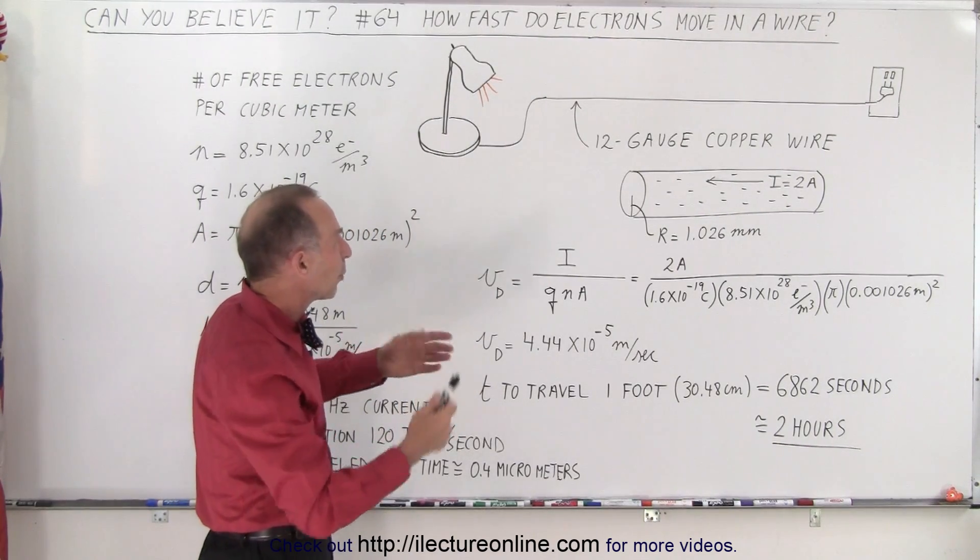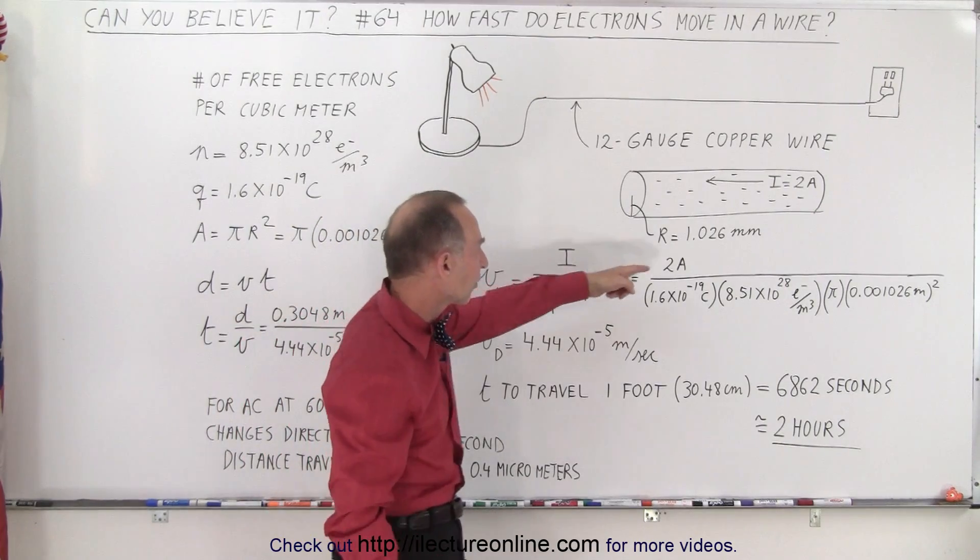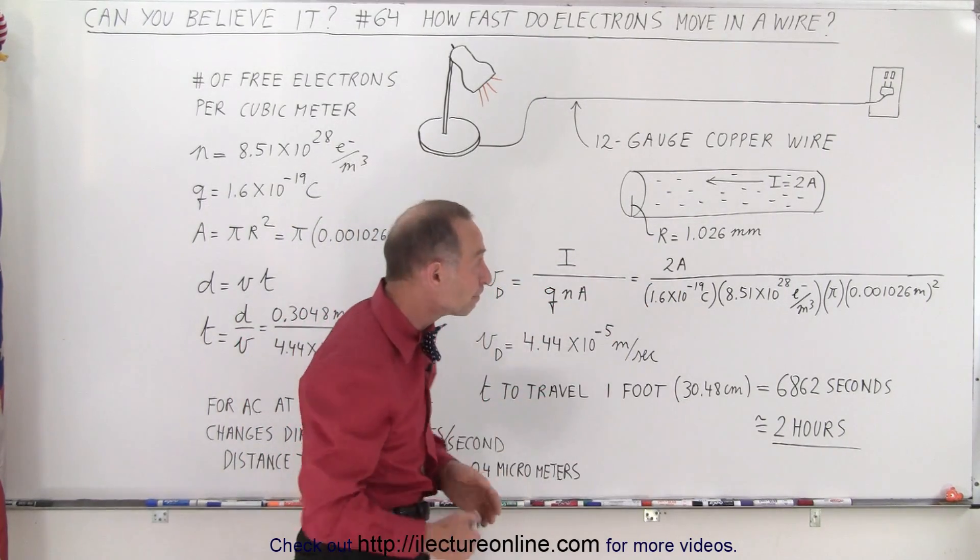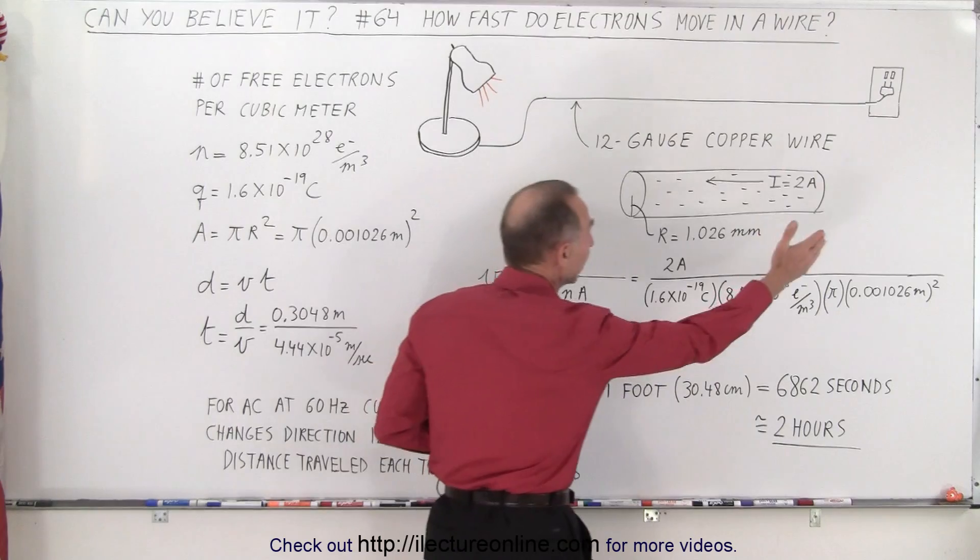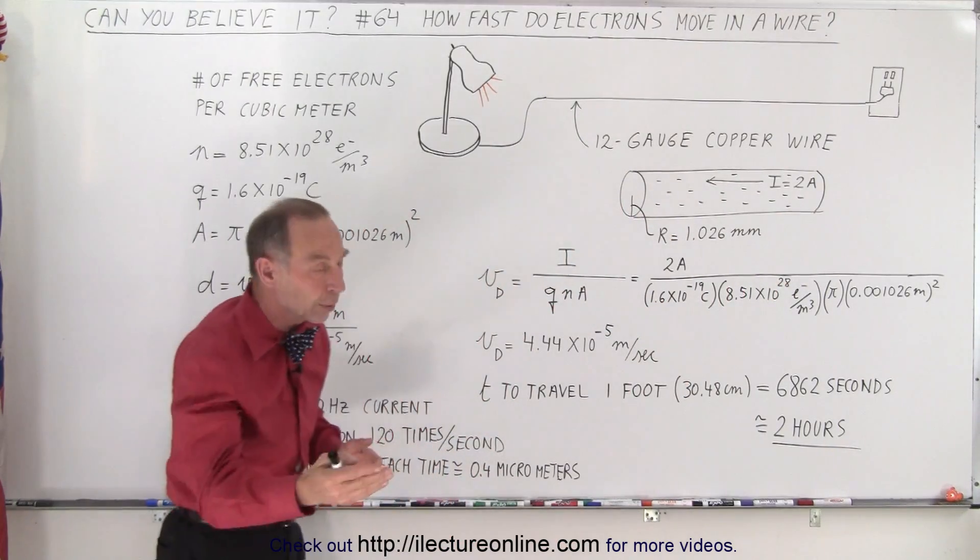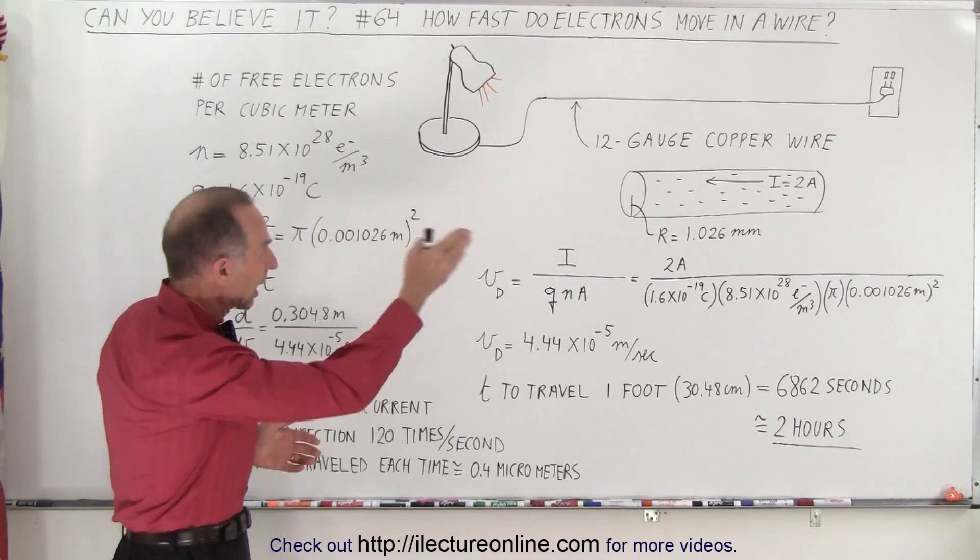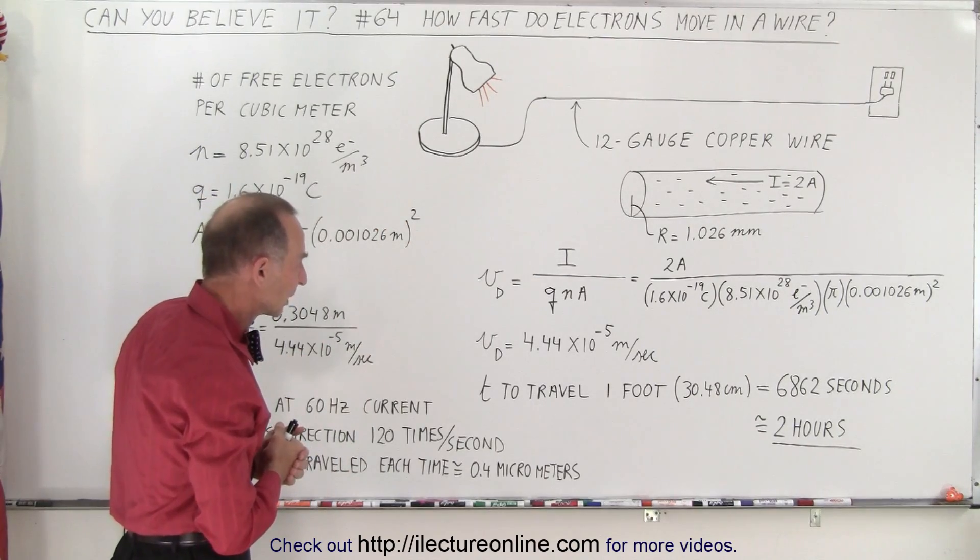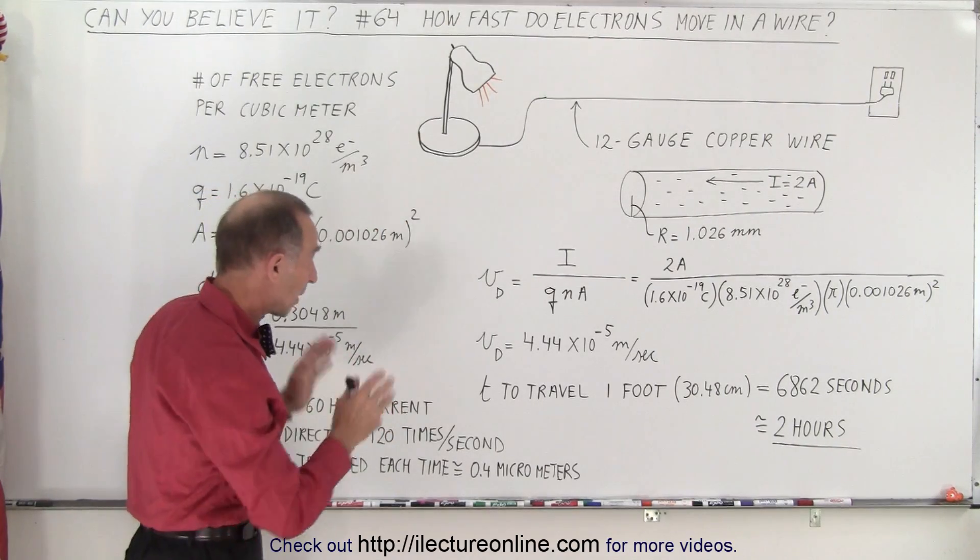So let's assume that we have a copper wire, 12-gauge copper wire, that has a radius of about 1 millimeter. And let's say that we have a current of 2 amps going along that wire from the outlet to the lamp.